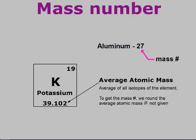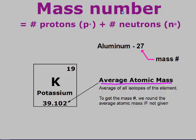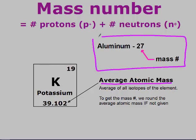The other number on the periodic table is the average atomic mass — it's the average of all the isotope masses of an element. The mass number, by contrast, is the number of protons plus the number of neutrons. For example, aluminum-27 means 27 is the mass number. The periodic table value isn't a whole number because it's an average of all different isotope masses. If you're not given a specific mass number, round the average atomic mass to the nearest whole number.